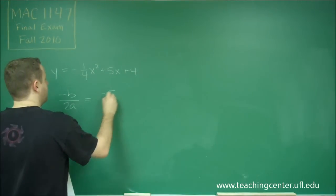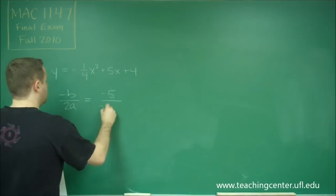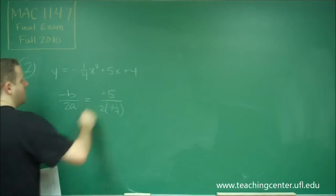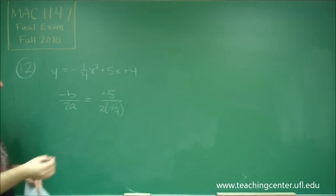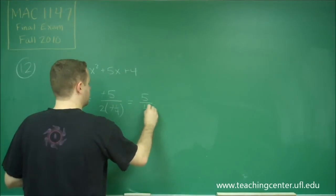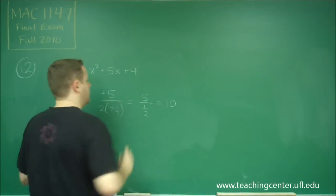we get negative 5 over 2 times our a, which would be negative one-fourth. We get our negatives to cancel out. We get 5 divided by one-half, which is 10.